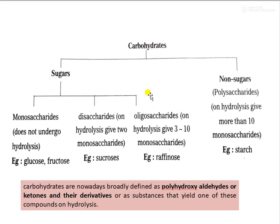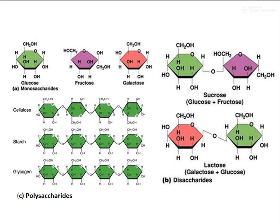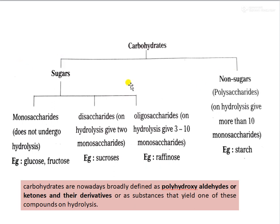Coming to the non-sugars, or polysaccharides: if hydrolysis gives more than ten monosaccharides, you call them polysaccharides. Starch is an example. When you break down one molecule of starch you will get different molecules of monosaccharides. Cellulose, starch, and glycogen are all examples of polysaccharides. This is the basic classification of carbohydrates: sugars and non-sugars, further divided into monosaccharides, disaccharides, oligosaccharides, and polysaccharides based on the number of monosaccharides they yield on hydrolysis.